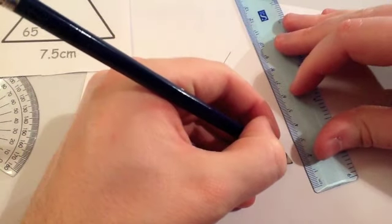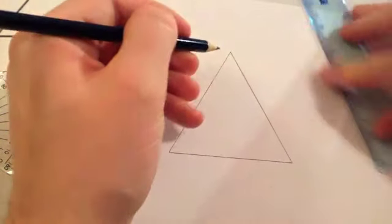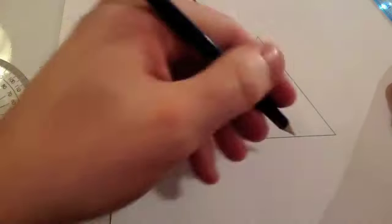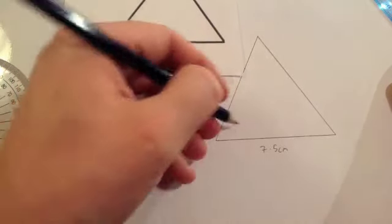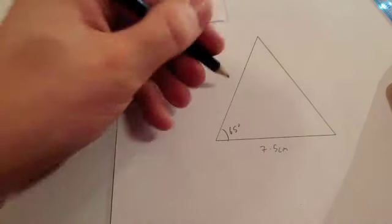And then the final step then is to join it up. To finalize it, what I would do is label the sides. It's the 7.5cm on the base. Your 65 degree angle. And your 8cm line.